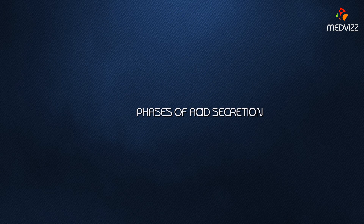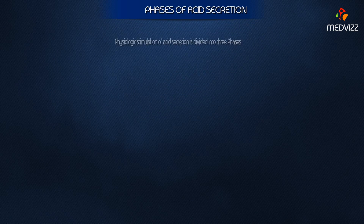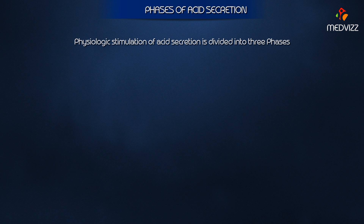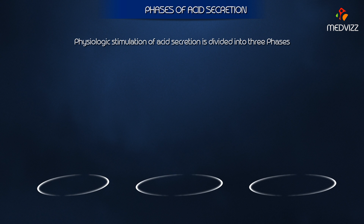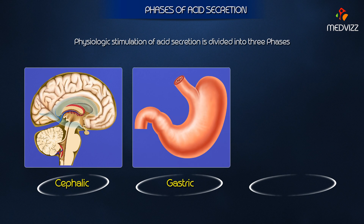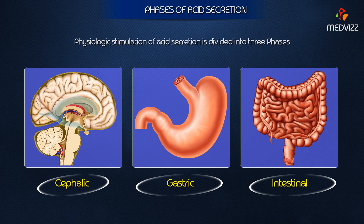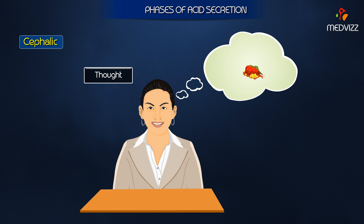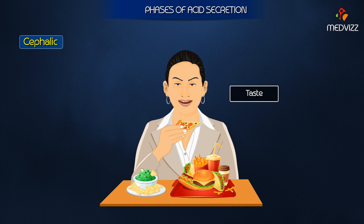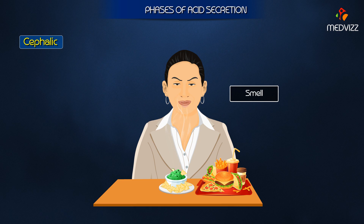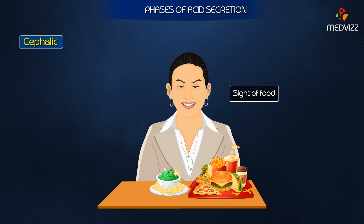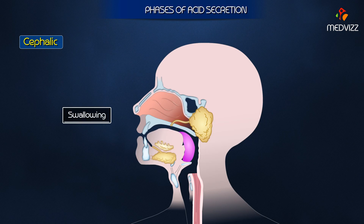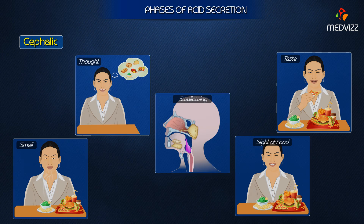The physiologic stimulation of acid secretion has classically been divided into three interrelated phases: cephalic, gastric, and intestinal. The cephalic phase is activated by the thought, taste, smell, or sight of food and swallowing. It is mediated mostly by cholinergic or vagal mechanisms.